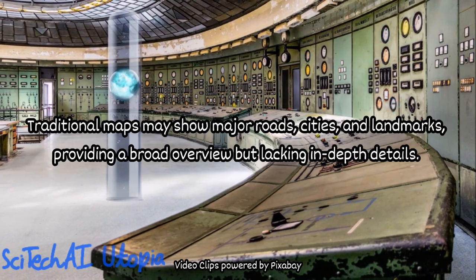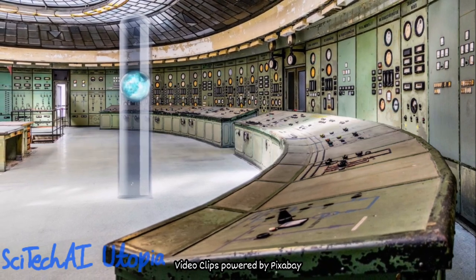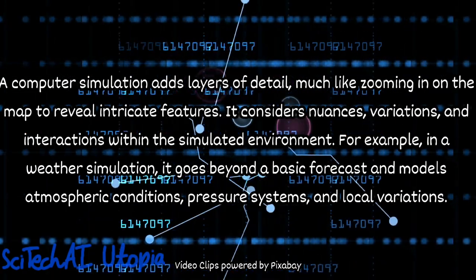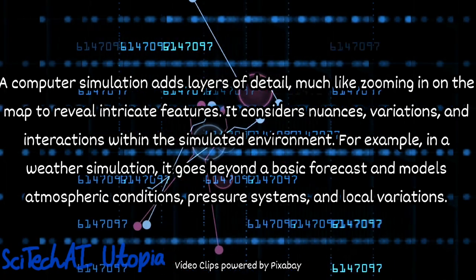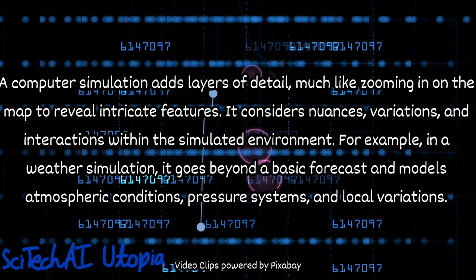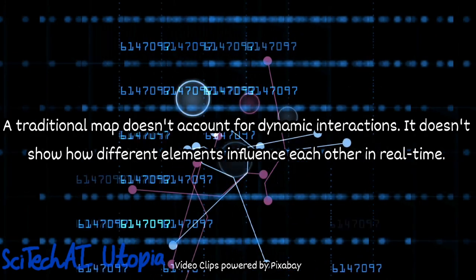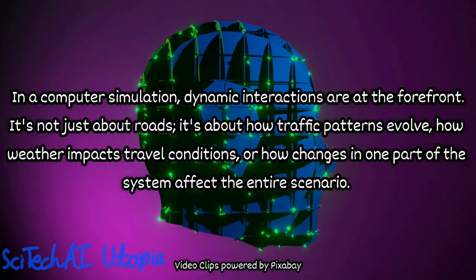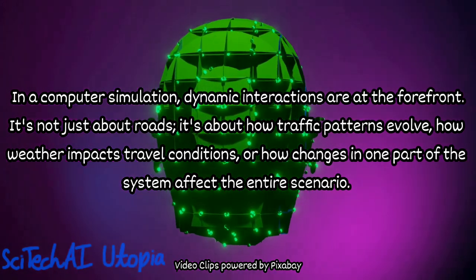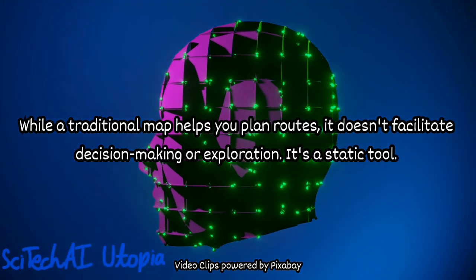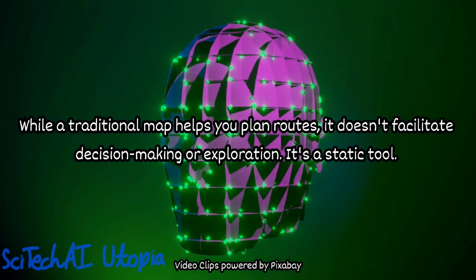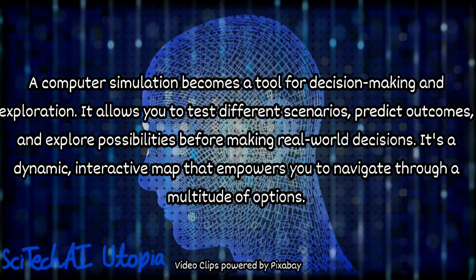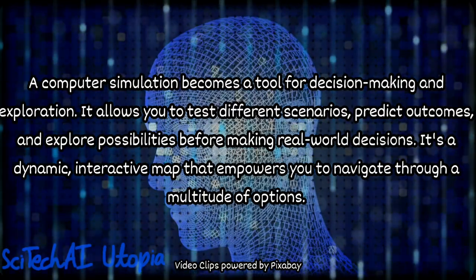Much like looking at the map before your trip, a computer simulation allows you to see what might happen in a given scenario without physically experiencing it. You can run the simulation to experiment with different conditions, make predictions, and observe outcomes virtually, saving time and resources compared to conducting experiments in the real world. Through simulation, you gain insights into how the system behaves under various conditions. It helps you understand the cause and effect relationships within the simulated environment. Just as your map helps you predict the best route and possible challenges, a computer simulation aids in predicting outcomes and understanding the consequences of different factors on the system. It is like a virtual playground where you can test ideas, strategies, or changes to the system without tangible consequences. You can iterate through different possibilities, refining the model or strategy until you find the most effective or desirable outcome.